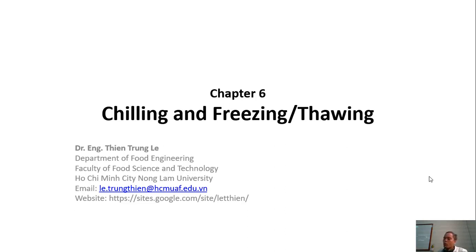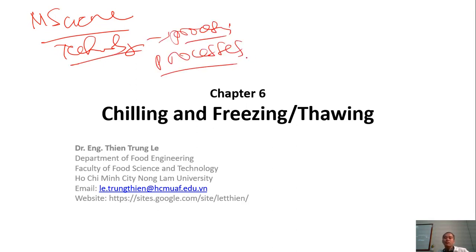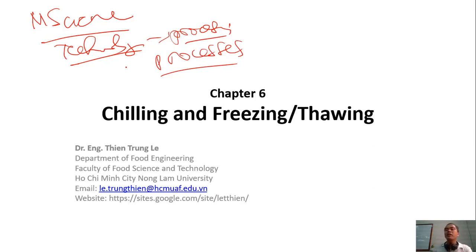Chapter 6. We already finished 5 chapters about meat science, so now we go to technology. Technology is about processing — processes which are applied in meat processing. We try to understand all the processes, and then the next chapter after that will be about meat products.